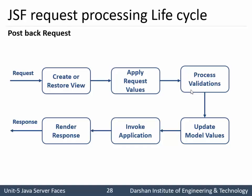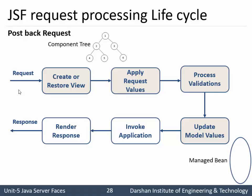For a postback request - that is, an older request from the client - there is already an existing component tree. The view is created, the same or updated component tree is used depending on the client request, then validation runs, values are updated, and the application is invoked. Whatever output is produced, the response is rendered to the client. In summary: for a new request, only Restore View and component tree creation occur before directly rendering the response; for a postback request, the processing lifecycle goes through all six phases.